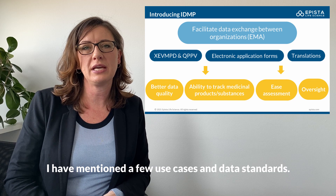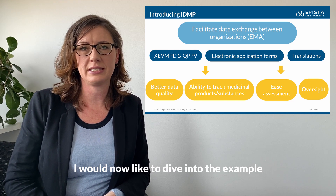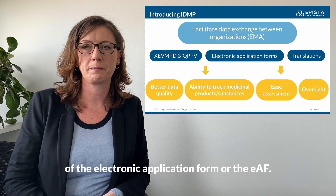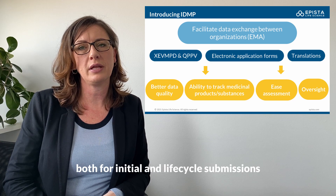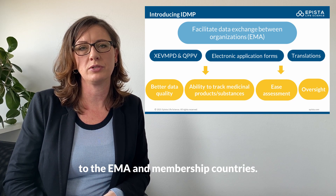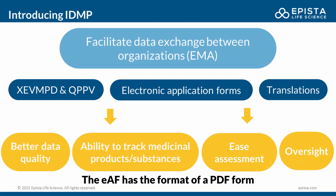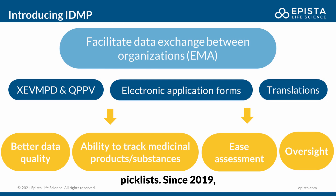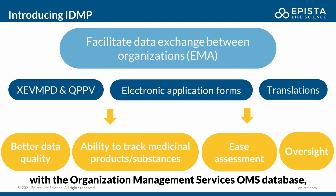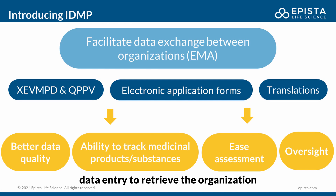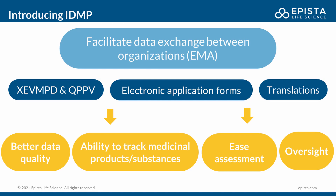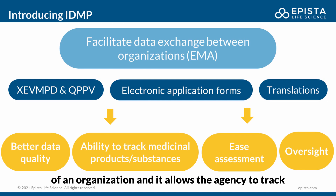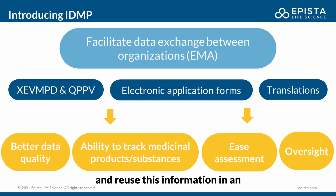I will now dive into the example of the electronic application form, or the EAF. It is used by the industry both for initial and life cycle submissions to the EMA and member countries. The EAF has the format of a PDF form with use of free text, fields, and controlled vocabulary — pick lists. Since 2019, it's also integrated with the Organization Management Services, OMS, database, allowing the person performing the EAF data entry to retrieve the organization information needed from the OMS database. This secures unique identification of an organization and allows the agency to track and reuse this information easily.